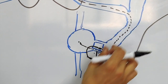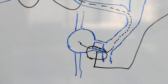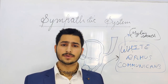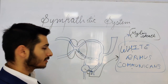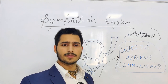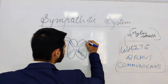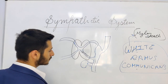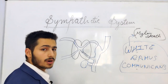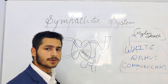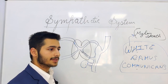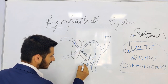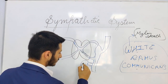The white ramus communicans connects the anterior ramus to the sympathetic trunk. The preganglionic fibers traveling in the white ramus communicans offer a variety of innervations in the body. The first type of innervation is at the level of origin of the preganglionic fiber. Note that the white ramus communicans only gives passage for preganglionic fibers, not postganglionic fibers. These preganglionic fibers synapse in the ganglion associated with the trunk.